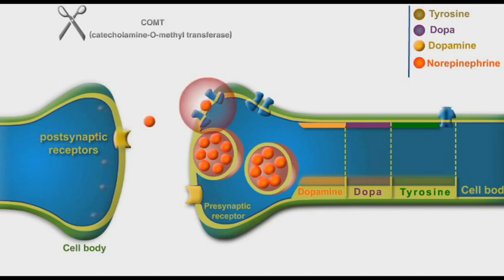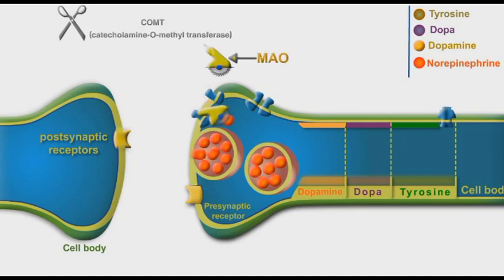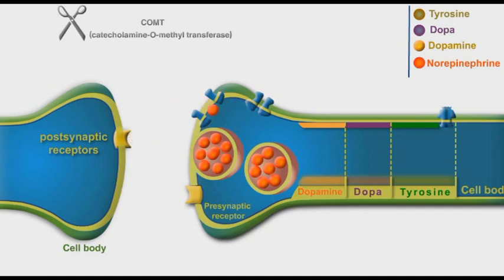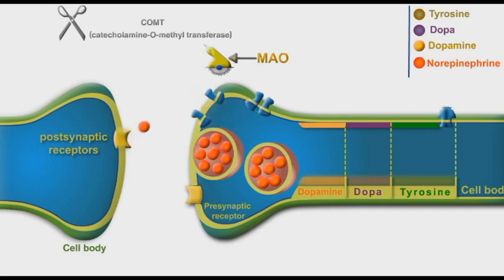Alternatively, some of the norepinephrine molecules are reuptaken by special presynaptic pumps and stored into the storage vesicles. Inside the presynaptic cytoplasm, some of the taken norepinephrine molecules are metabolized by the cytoplasmic monoamine oxidase enzyme into inactive metabolites.